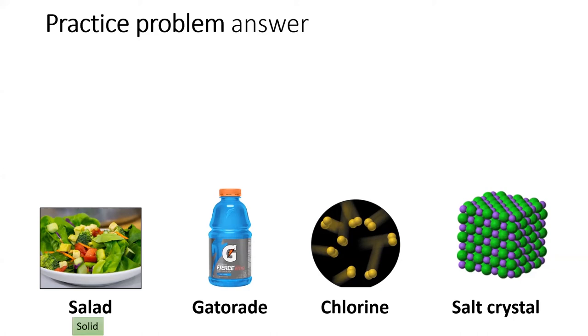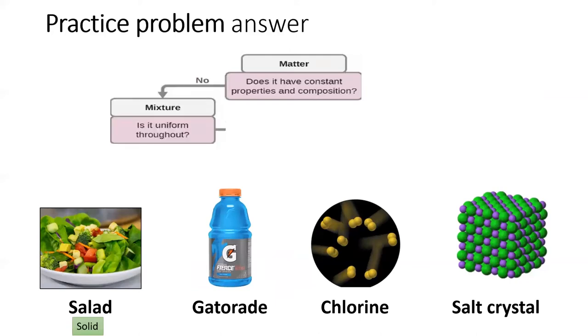The answer to this will start with the salad. In a salad, obviously, the particles are close together, and they do not move around much. A salad is a solid. The next question to ask is, does a salad have constant properties and composition? Well, a salad is clearly made up of different things. So, we would classify salad as a mixture. Next, is a salad uniform throughout? Well, I see some sections that have more broccoli, and some sections with more tomato. So, it is definitely not uniform throughout. A salad is a heterogeneous mixture.